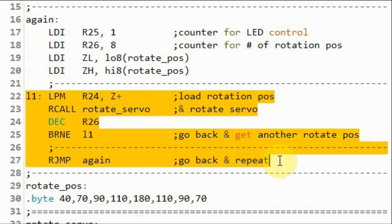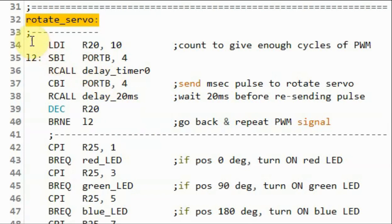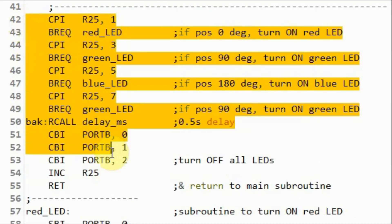Inside subroutine, rotate servo, using this loop here, we will generate the 10 cycles of pulse width modulated signal for each rotational position. This part of the code is used to turn on the LEDs based on the rotational position of the servo. So, the red LED will be on when the position is at 0, and the green will be on when the position is at 90, and the blue will be on when the position is at 180 degrees.